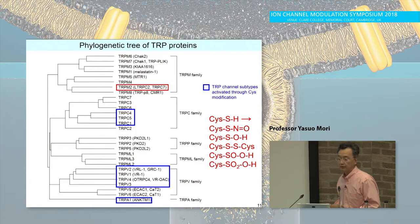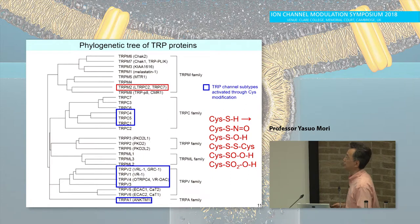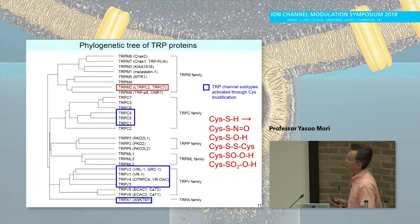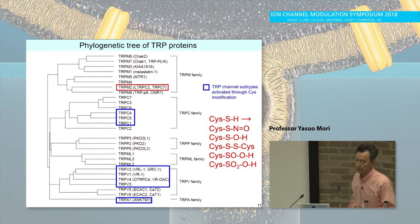Certainly, TRPM2 is a very important oxidation-sensitive TRP channel. When we further pursued the study, we found multiple TRP channels that show extensive oxidation sensitivity, but they employ a completely different sensing mechanism — that is, oxidative modification of cysteine thiols, such as nitrosylation, hydroxylation, disulfide formation, and further oxidation.